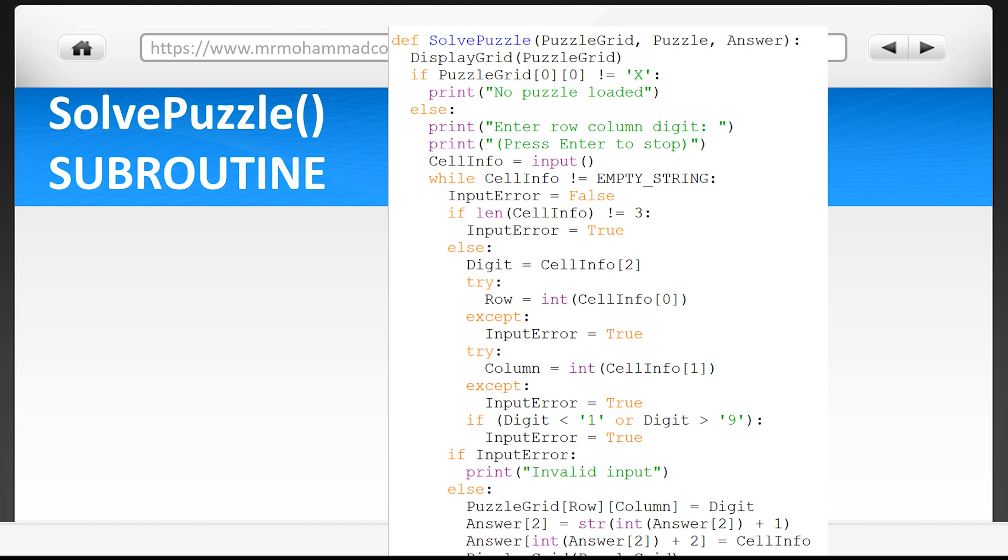Up next in the next three lines, we are taking the values out of cell info and placing them into the appropriate variables for row, column, and digit. I won't speak on this too much as you've seen this elsewhere in the code already.